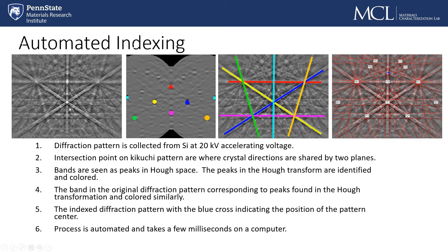This is a silicon material — we're looking at one Kikuchi pattern of that silicon material. What occurs is we take that pattern and invert it. The software inverts it to Hough space. Hough space shows each plane as peaks. These points here are actually peaks, and they are color-coded to show which planes correspond to which peak. So this peak shown in pink is this particular plane, and this red one is another, and so on. Once we've indexed these planes and determined which planes are which, we can then index the intersection points of these planes. This happens in just a few milliseconds.